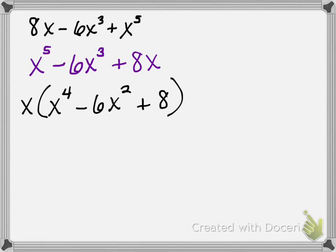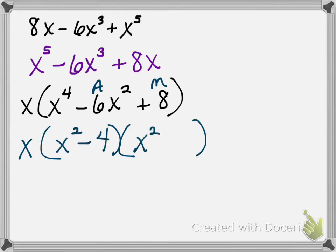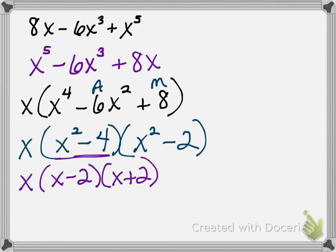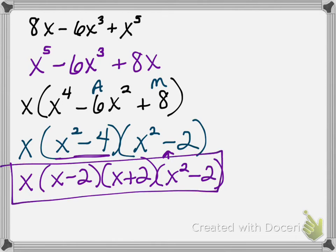Now it's just like a problem we were doing before. I'm looking for what multiplies to give me 8 and adds to give me negative 6 — that is negative 4 and negative 2. So this factors into x times x squared minus 4 times x squared minus 2. Before we say that's the final answer, we need to check if each factor can be factored more. x squared minus 4 is a difference of perfect squares, so it factors into x minus 2 times x plus 2. The last factor, x squared minus 2, is a difference but 2 is not a perfect square, so it stays as is. The final answer is x times (x minus 2) times (x plus 2) times (x squared minus 2).